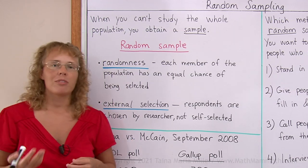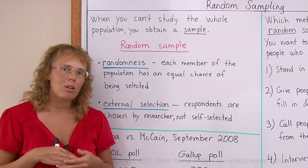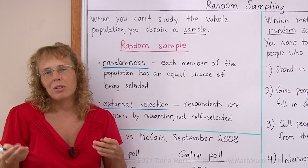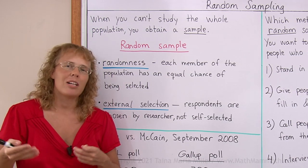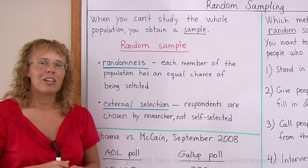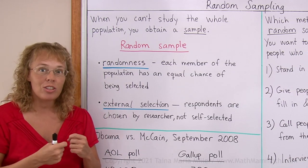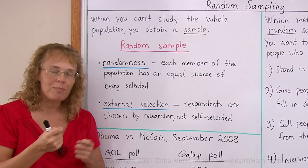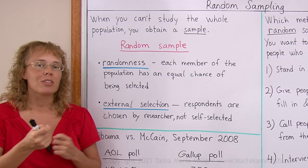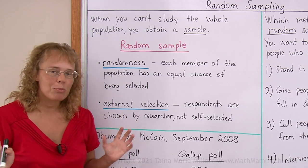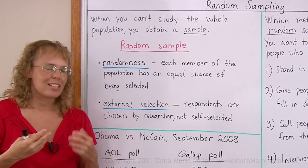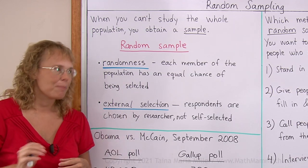For example, if you are making a poll and you want to find out what people in the US think about cats, then you have to devise a method of selecting a few people randomly from the whole United States population and then ask them about cats.